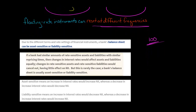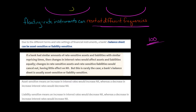So what does it mean to say that a bank's balance sheet is asset sensitive? An increase in interest rates — let's say interest rates went up by 100 basis points — is going to increase the bank's net interest income. So interest rates go up, and then the bank's net interest income goes up when the bank has an asset sensitive balance sheet. Conversely, a decrease in interest rates would hurt net interest income if the bank had an asset sensitive balance sheet.